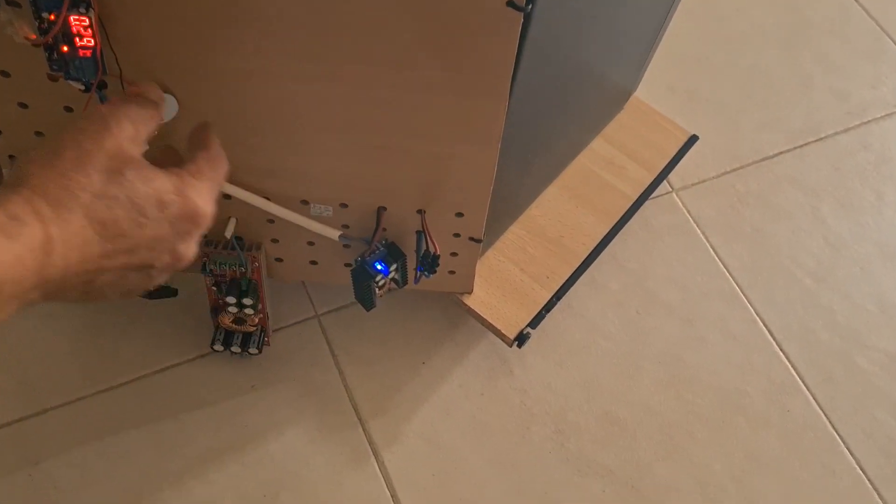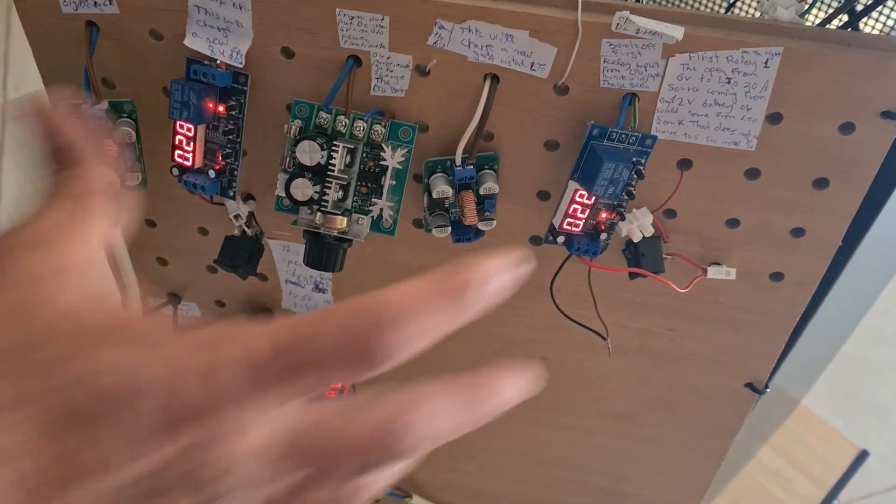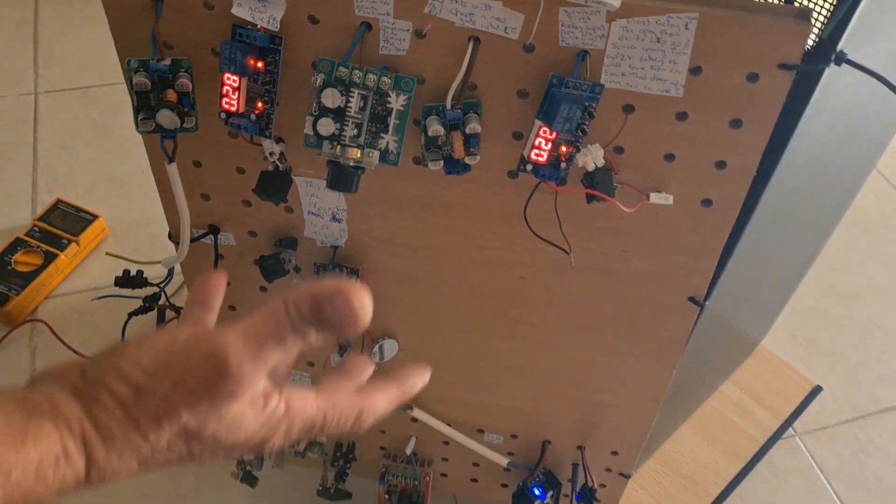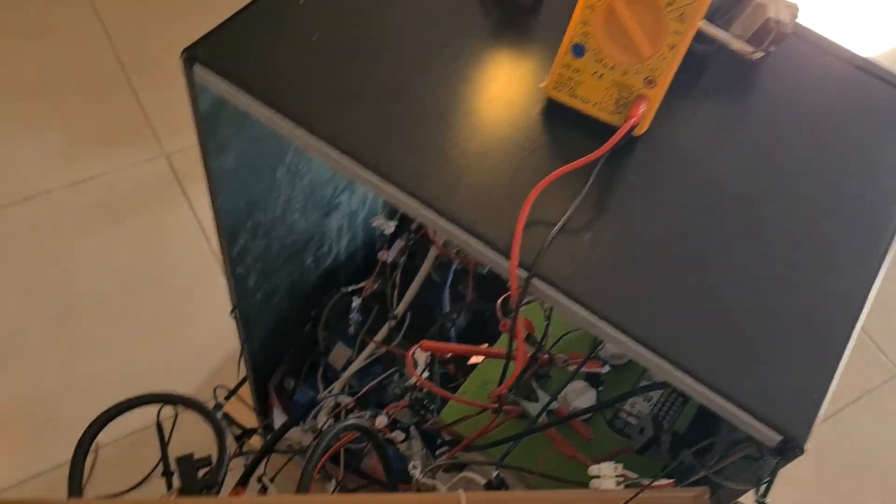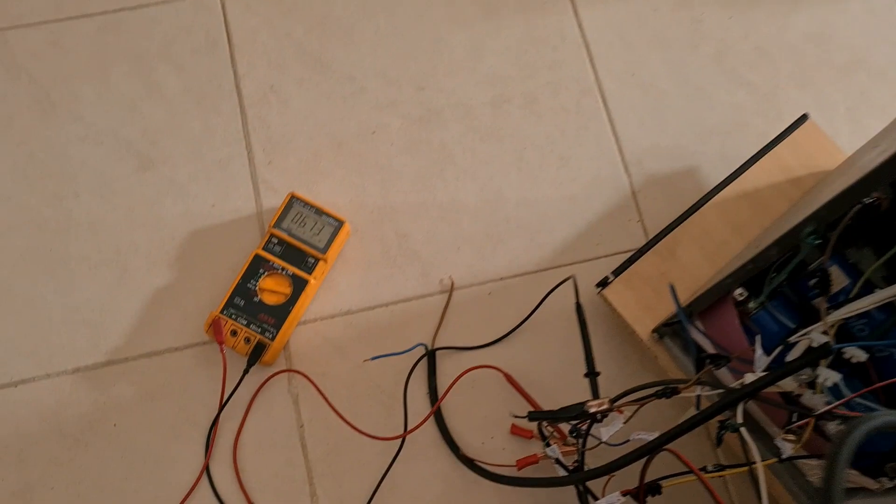So this is a step-down. This is a DC converter. This is a relay. They took around two ampere almost. So it's really more or less okay. You can see still the number, and we are happy with that.